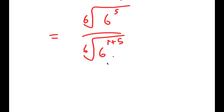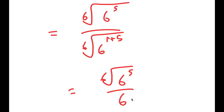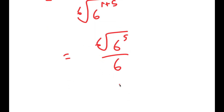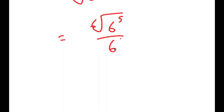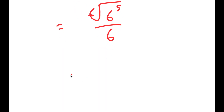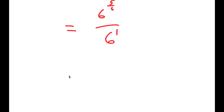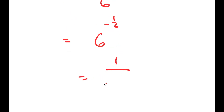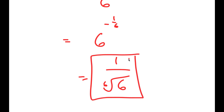So the 6th root of 6 to the power of 6 is just 6, so I get the 6th root of 6 to the power of 5 over 6. Now, the 6th root of 6 to the power of 5 is the same thing as 6 to the power of 5 over 6. So I have this over 6 to the power of 1, which is equal to 6 to the power of negative 1 over 6, which is equal to 1 over the 6th root of 6. So this is my answer.